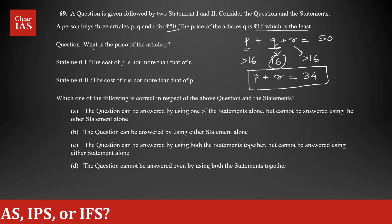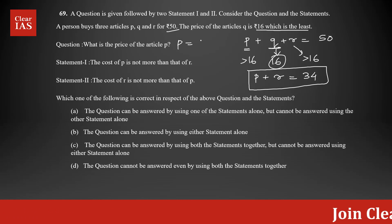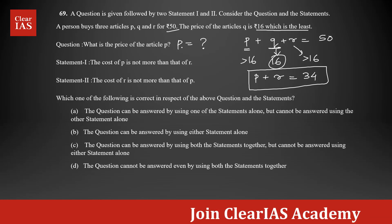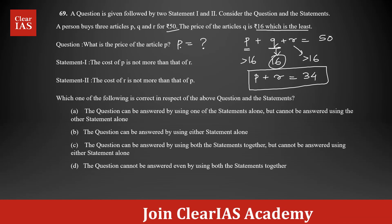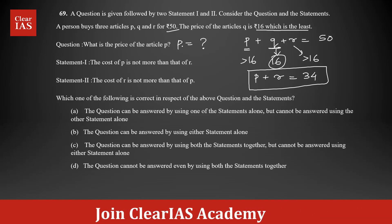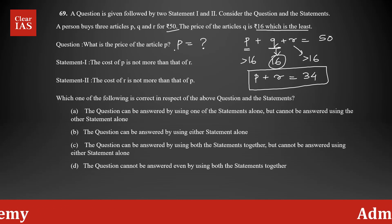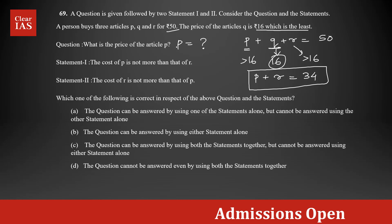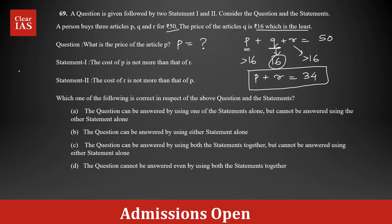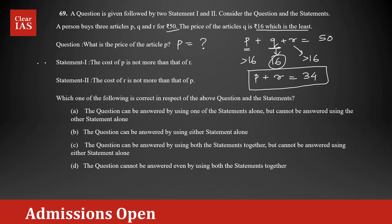The question is asking: what is the price of P? I need to find a unique value for P. It's a value-based data sufficiency question. If you're getting multiple values of P, the statement is not sufficient. If you're getting a unique answer for P, the statement is sufficient. Now we're going to start with statement 1.